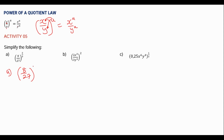Let's look at these examples. First one: 8 over 27 to the power 2/3. We can write 8 as a product of its prime factors and do the same with 27. So 8 is 2 to the power 3, and 27 is 3 to the power 3, all raised to the power 2/3.